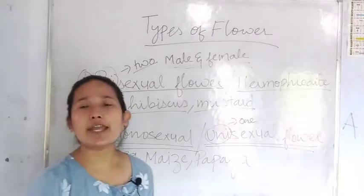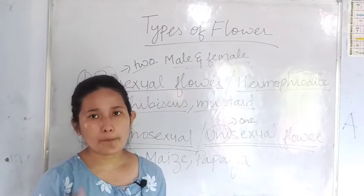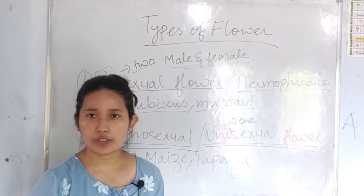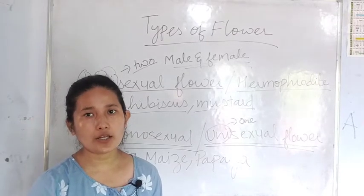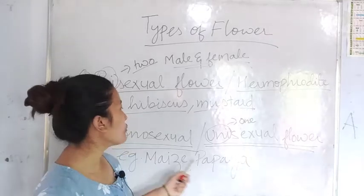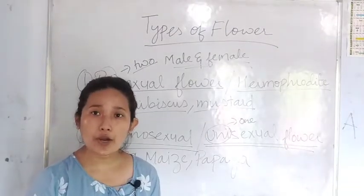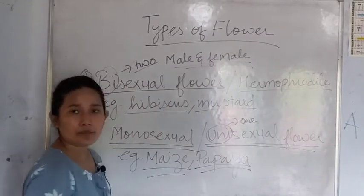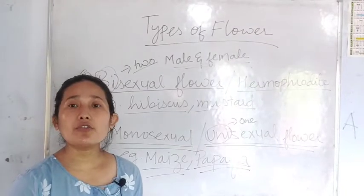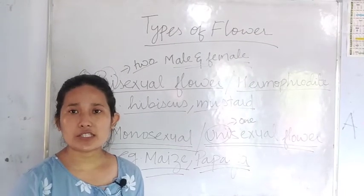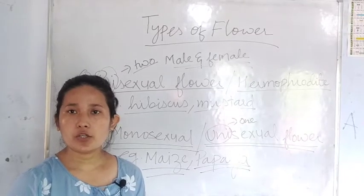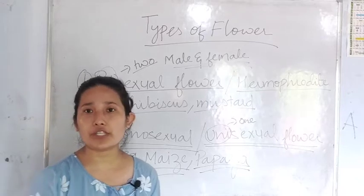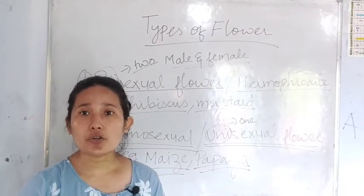In case of monosexual or unisexual flower — uni means one — you have either a male or a female reproductive part within the same flower, not both. Those kinds of flowers are referred to as monosexual or unisexual flowers. Examples are maize and papaya. So on the basis of presence of reproductive parts: if both are present it is bisexual; if either one is present it is unisexual.